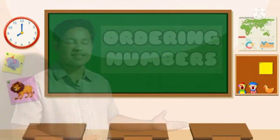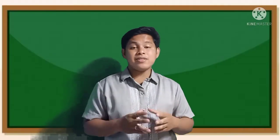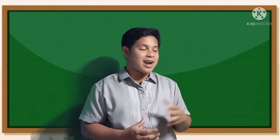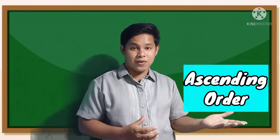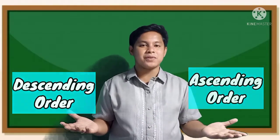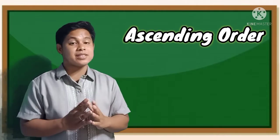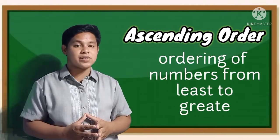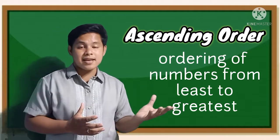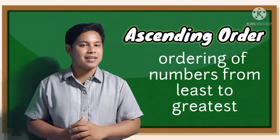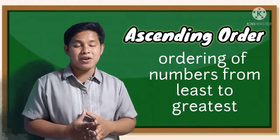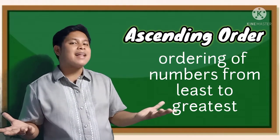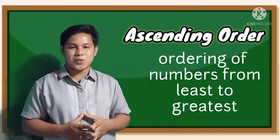Ordering Numbers! In ordering numbers, we have two ways. These are ascending order and descending order. Ascending order is when you arrange or order the numbers from least to greatest — when you arrange the numbers from smaller up to bigger, that is ascending order.